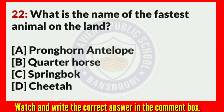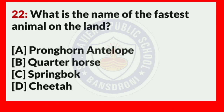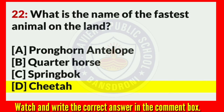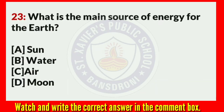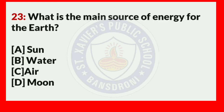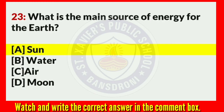What is the name of the fastest animal on land? Answer D: Cheetah. What is the main source of energy for the earth? Answer A: Sun.